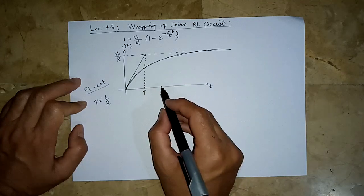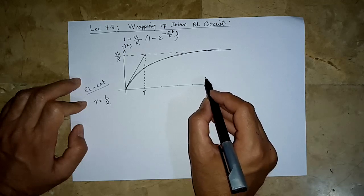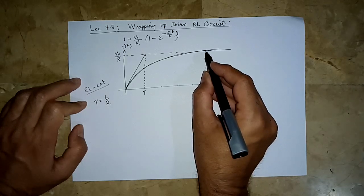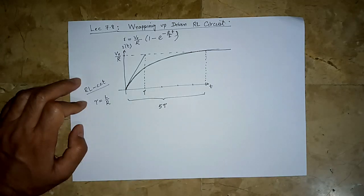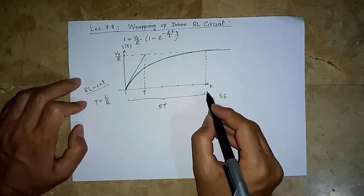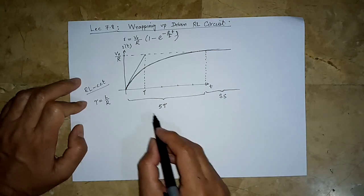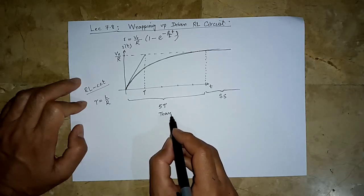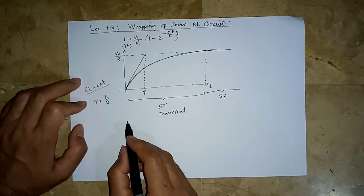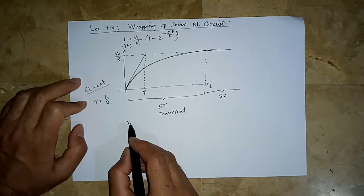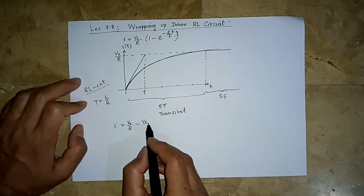In 5 times this time constant — so 2, 3, 4, 5 — in roughly 5 time constants, we say that the circuit enters steady state. So steady state starts from here and goes up to infinity, and this earlier part is the transient part. Let me write that expression once again to separate the steady-state part and the transient part.